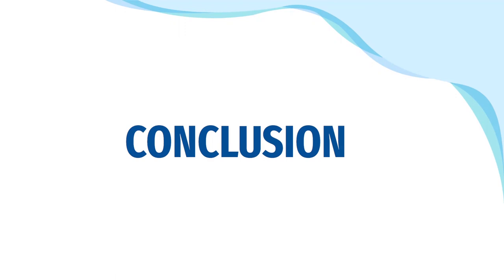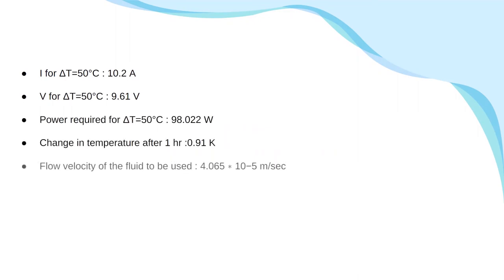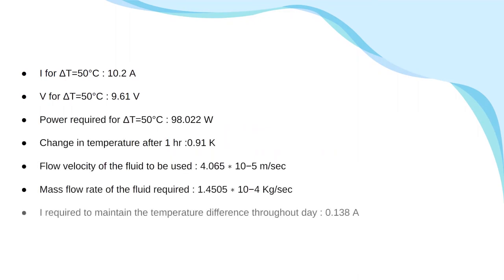So, after a detailed study, we came up with a conclusion that current required for maintaining a temperature difference of 50 degree centigrade was 10.2 Ampere. Change in temperature that we observed after a duration of 1 hour will be 0.91 Kelvin. Current required to maintain the temperature difference throughout the day was observed to be 0.138 Ampere.